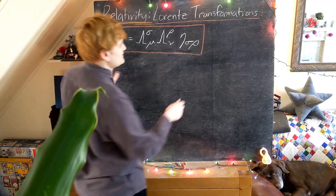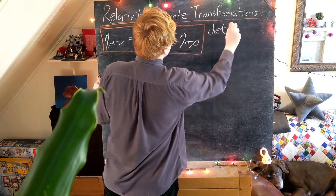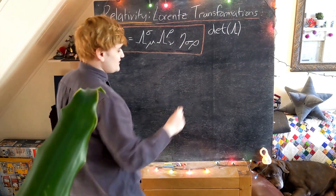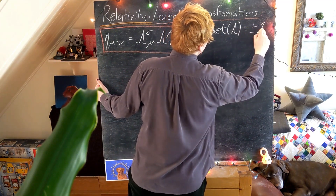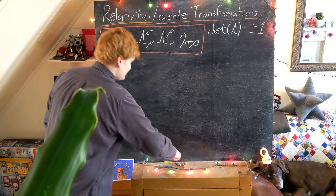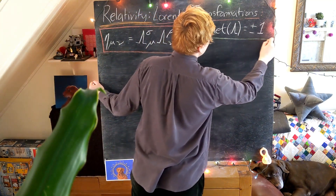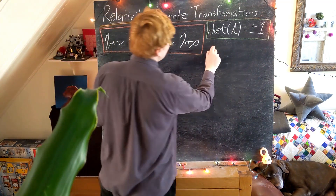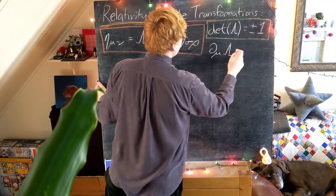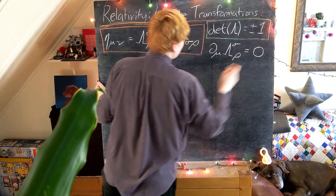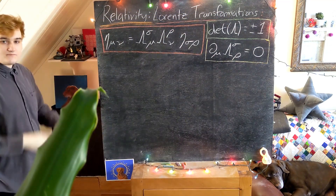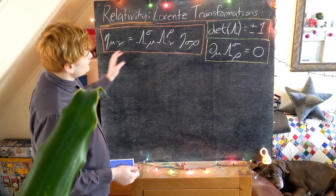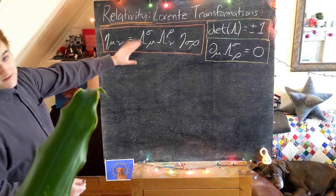From the isometry condition we derived that the determinant of any lambda matrix must equal plus or minus 1. We'll see a lot more of this shortly, but for now it isn't too useful. Then we have the restatement of the linearity condition: the partial derivative of any lambda matrix is always zero. Now I'm simply going to give you a lambda matrix and we'll go through and check whether or not it satisfies all of these conditions.